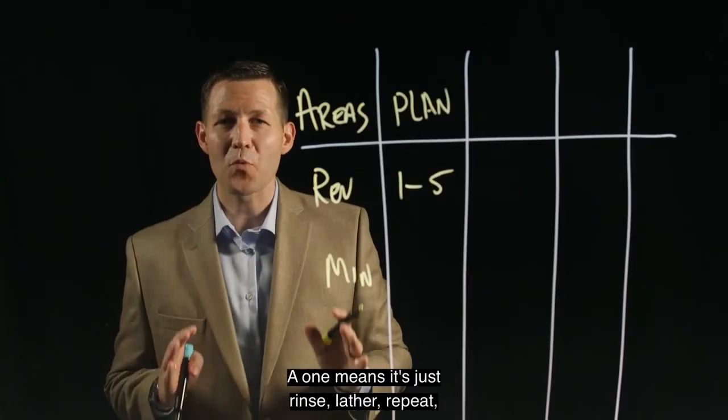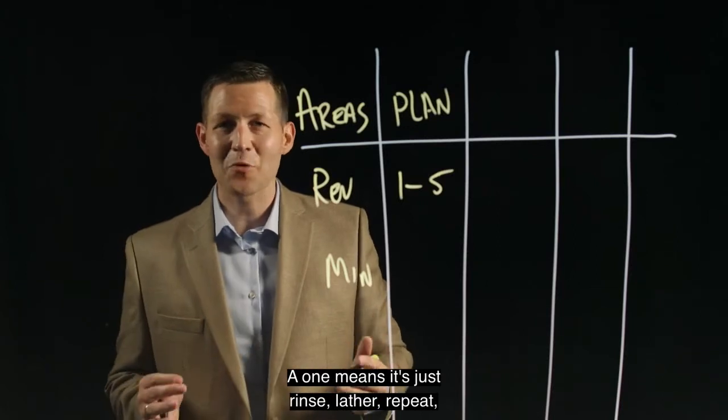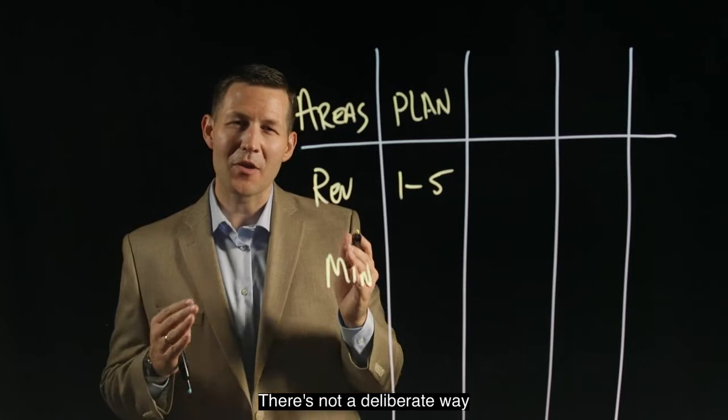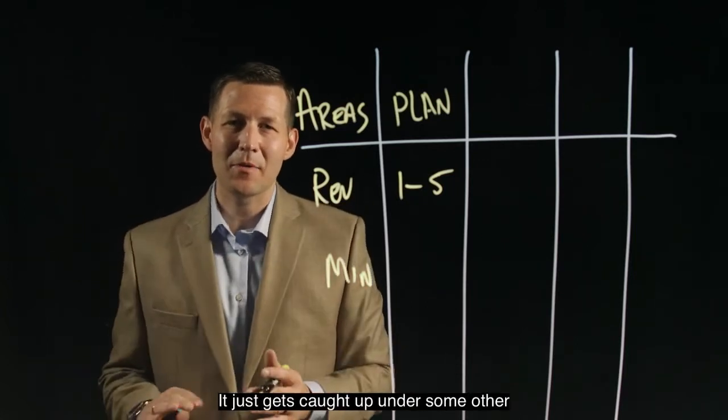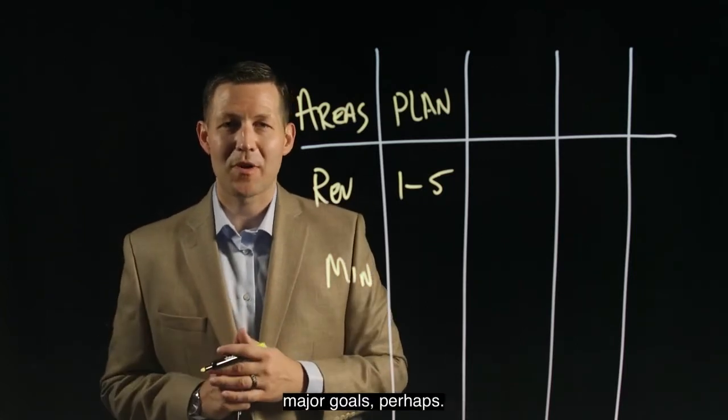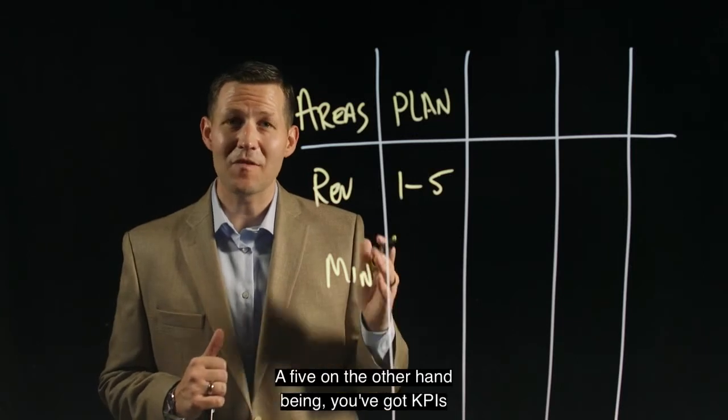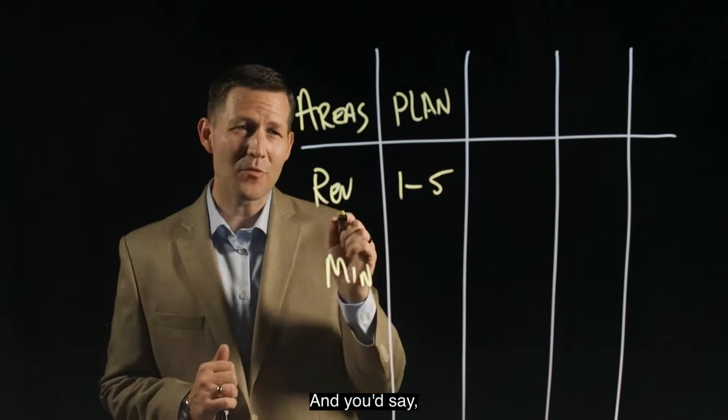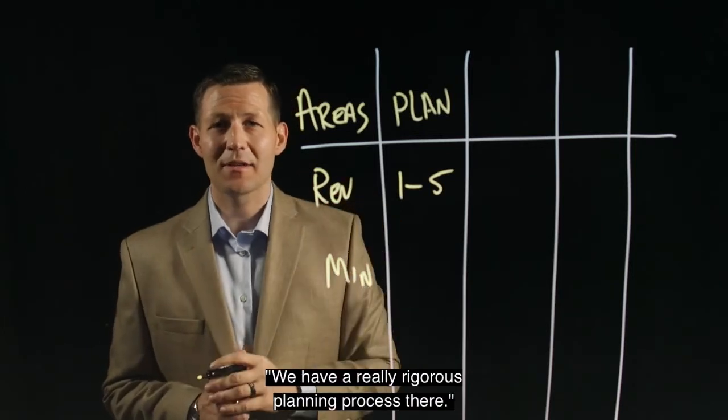Don't overthink this. A one means it's just rinse, lather, repeat—you just do what you've always done. There's not a deliberate way you apply planning to that dimension of the business. It just gets caught up under some other major goals perhaps. A five, on the other hand, means you've got KPIs and goals and data that's informing your process, and you'd say we have a really rigorous planning process there.